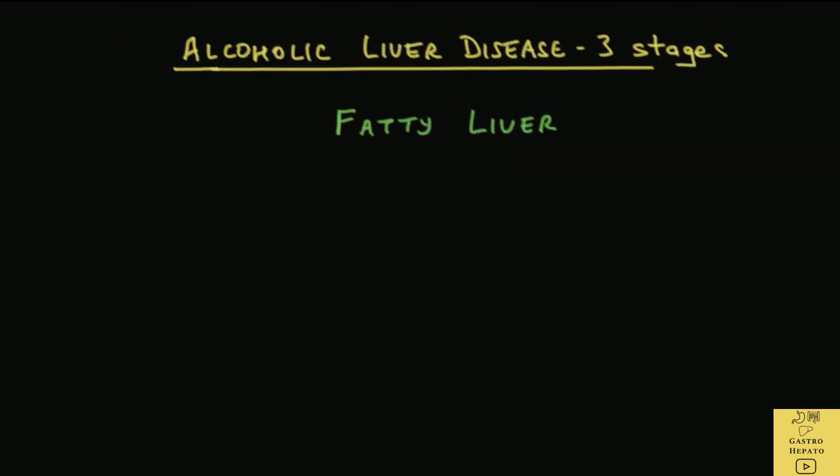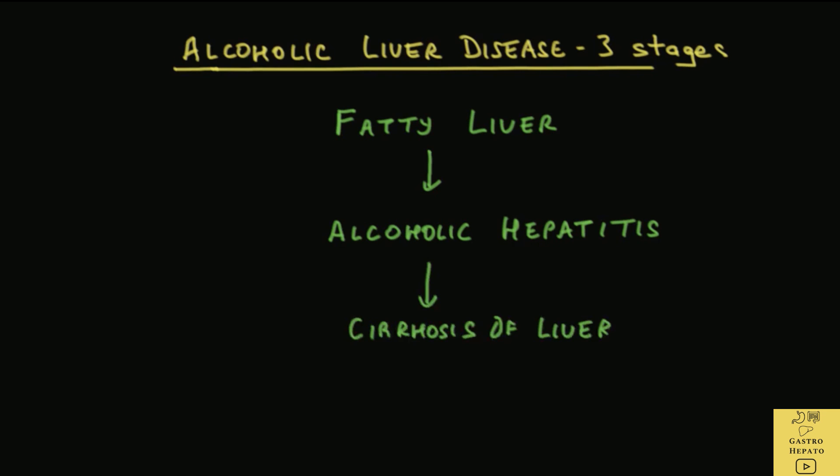There are three stages of alcoholic liver disease. The first stage is fatty liver. The second stage is alcoholic hepatitis. The third stage is cirrhosis of the liver.